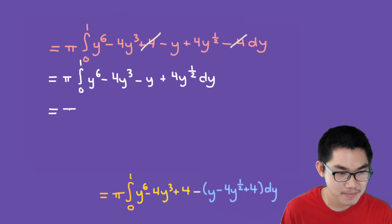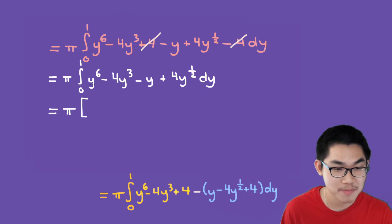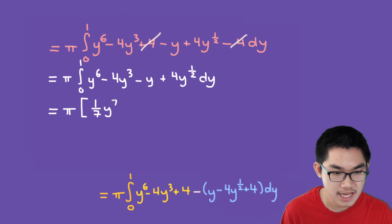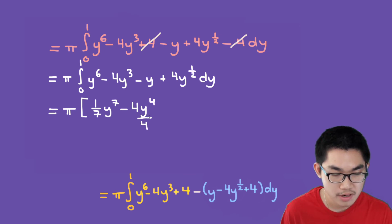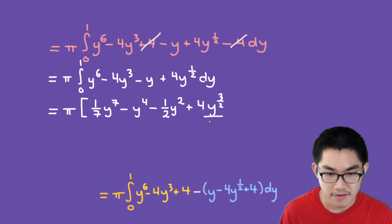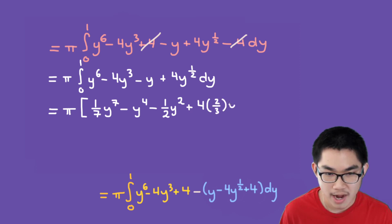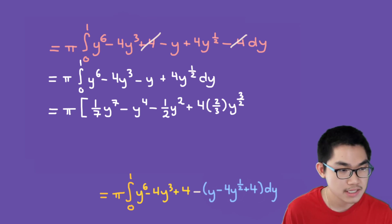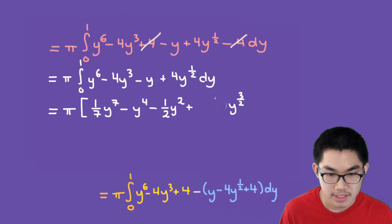Now we find the antiderivative of each term. The antiderivative of y⁶ is (1/7)y⁷. For 4y³, the antiderivative is 4·(y⁴/4) which simplifies to y⁴/... actually giving us (1/2)y⁴ after the 4s cancel — wait, it gives y⁴. For y it gives (1/2)y². For 4y^(1/2), the antiderivative is 4·(y^(3/2))/(3/2), which equals (8/3)y^(3/2). We evaluate all of this from 0 to 1.